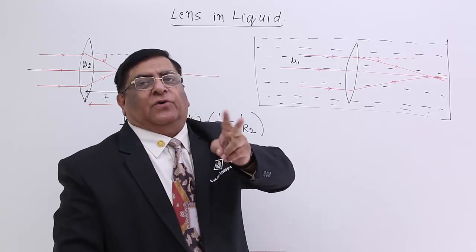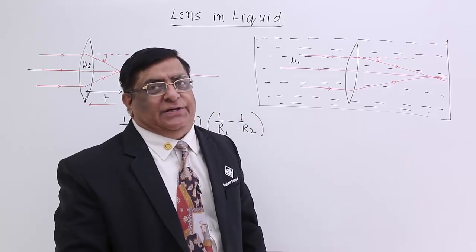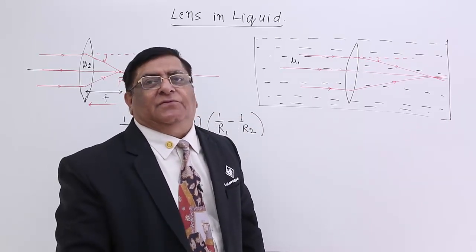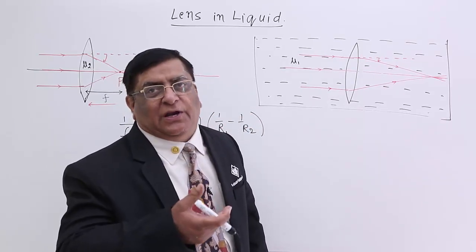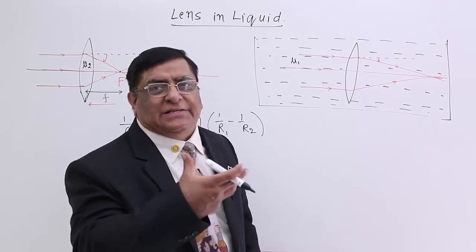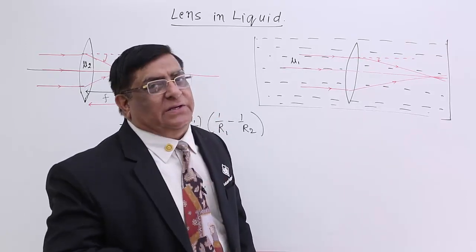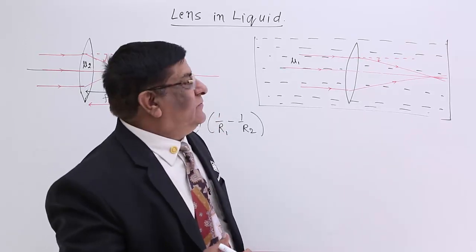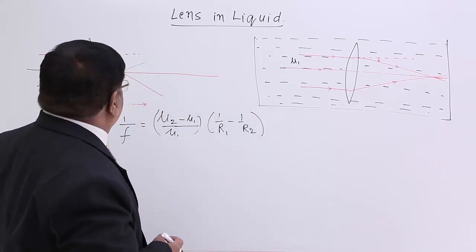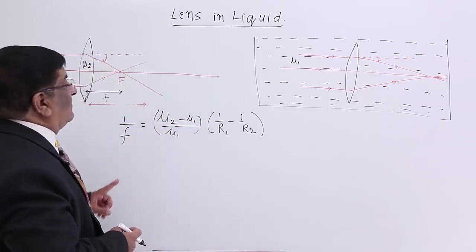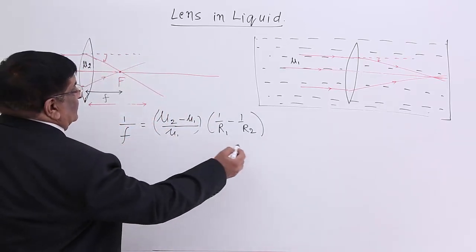We know focal length and power are inversely related to each other. If there is an increase in power, there will be a decrease in focal length. If there is a decrease in power, there will be an increase in focal length. What happened to this — we will find out with this formula.